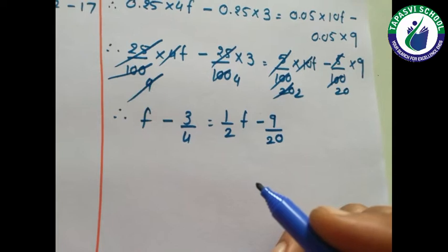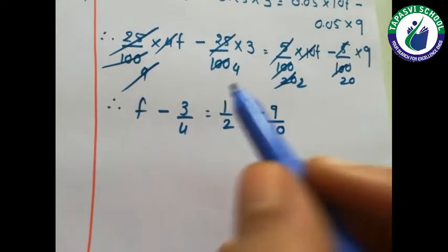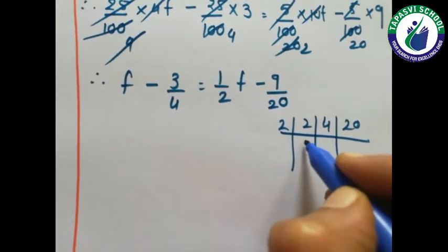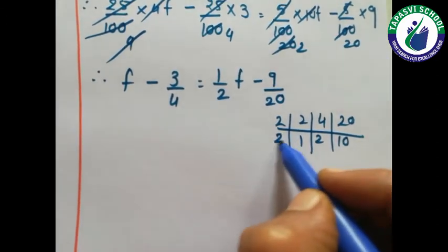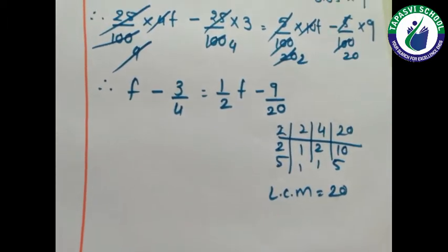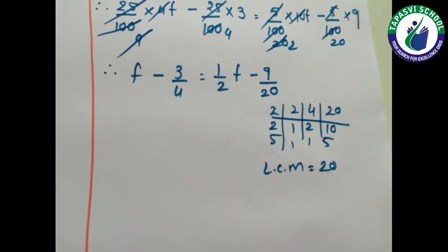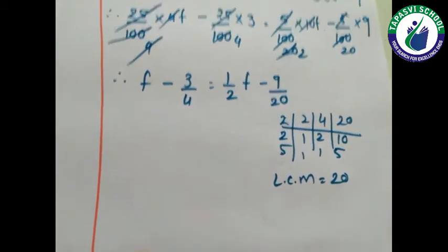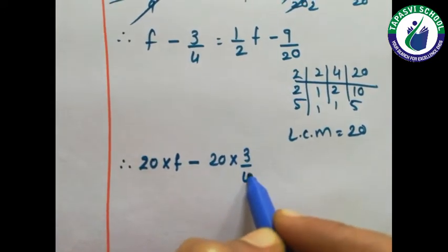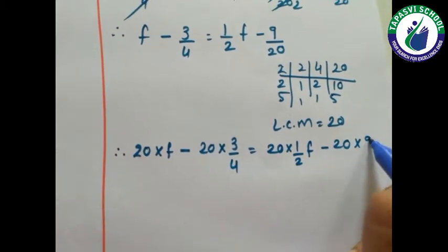Now students we will take the LCM, as our equation is in fractions. We will take LCM of 2, 4, and 20. Using prime factorization: 2 into 2 into 5 gives 20. So our LCM will be 20. As we discussed earlier, whenever we take LCM we multiply all the terms by the LCM. So here: 20 into f, 20 into 3 upon 4, 20 into 1 upon 2 f, and 20 into 9 upon 20.